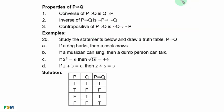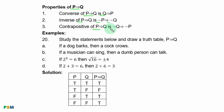Properties of 'if P then Q': 1. Converse of 'if P then Q' is 'if Q then P'. 2. Inverse of 'if P then Q' is 'if not P then not Q'. 3. Contrapositive of 'if P then Q' is 'if not Q then not P'.